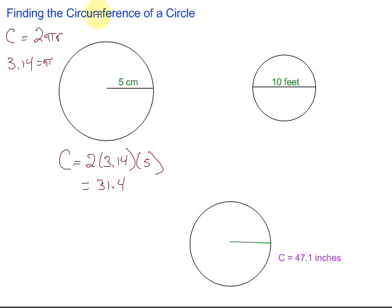And when we're talking about the circumference of a circle, our label circumference is just a distance. So our label will just be that same label, centimeters. So the circumference of this circle given a radius of 5 centimeters is 31.4 centimeters. Let's take a look at this one.